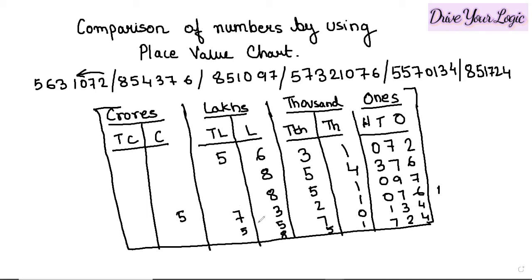After that, look at the next numbers. Here five and five are the same in the ten lakhs place, but here it is five-six and here five-five, so the one with six in the lakhs place is greater. We compare those two: one has six and the other has five in the lakhs place, so we take the greater one as number two, and the other automatically becomes number three.